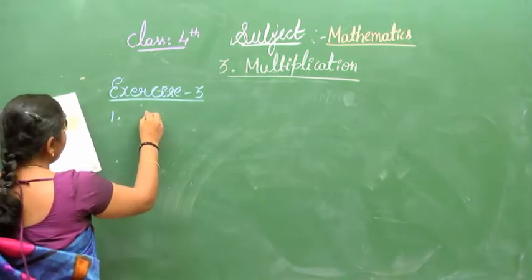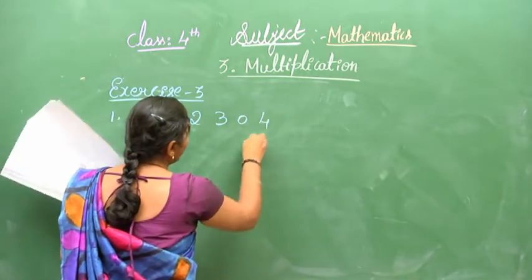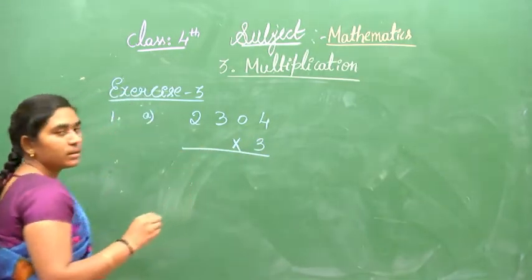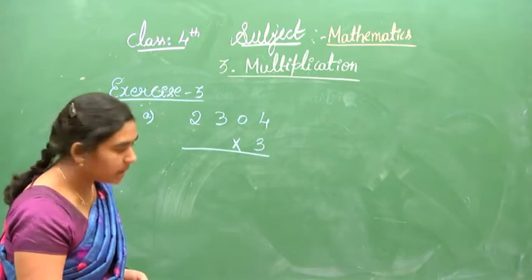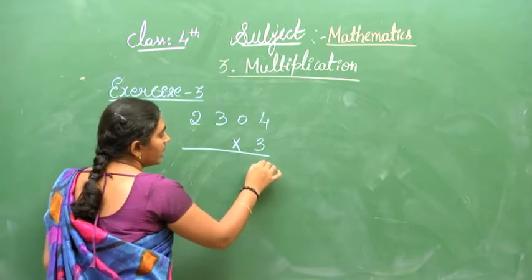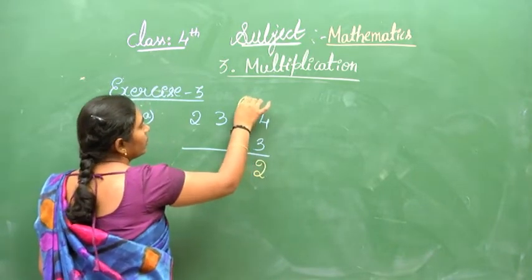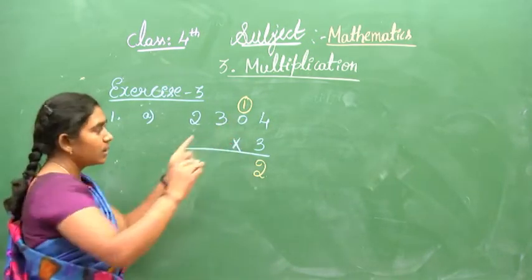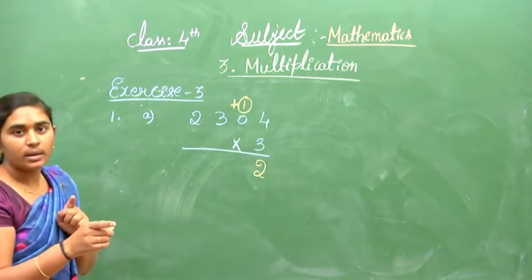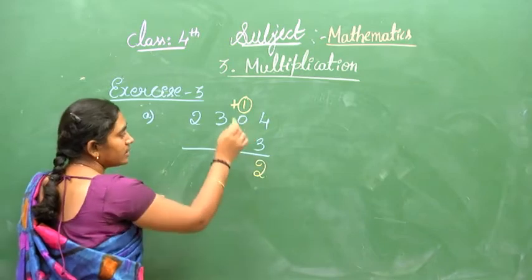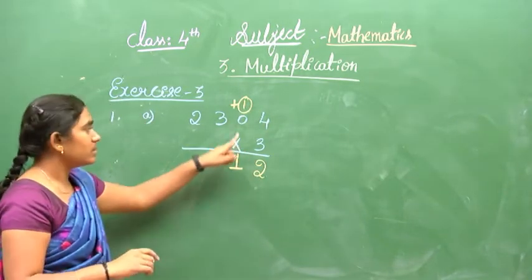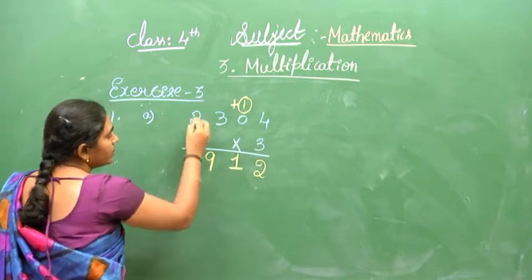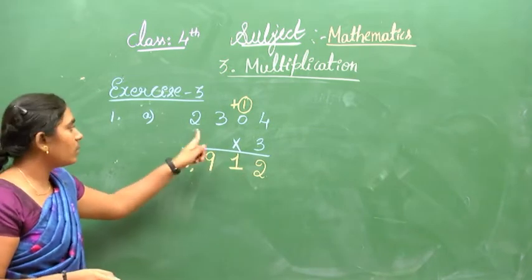First: 2,300 multiplied by 3. Start from the right. 3 times 0 is 0 — write 0. 3 times 0 is 0 — write 0. 3 times 0 plus carry 1 is 1 — write 1. 3 times 3 is 9, 3 times 2 is 6. The answer is 6,900.